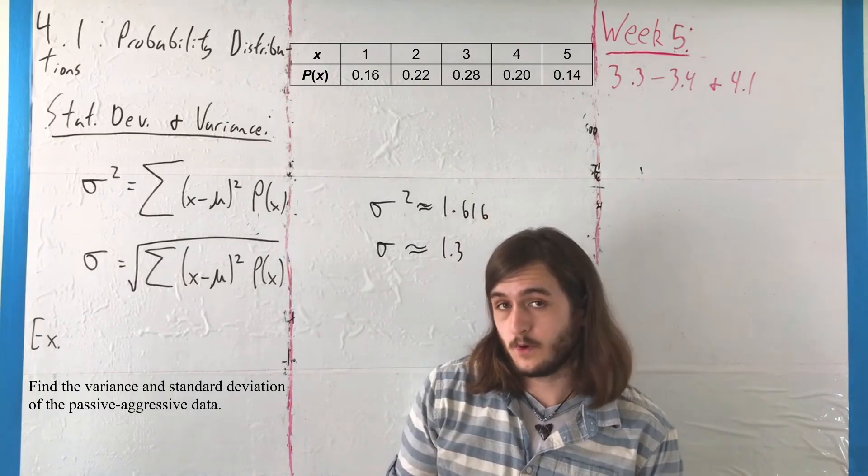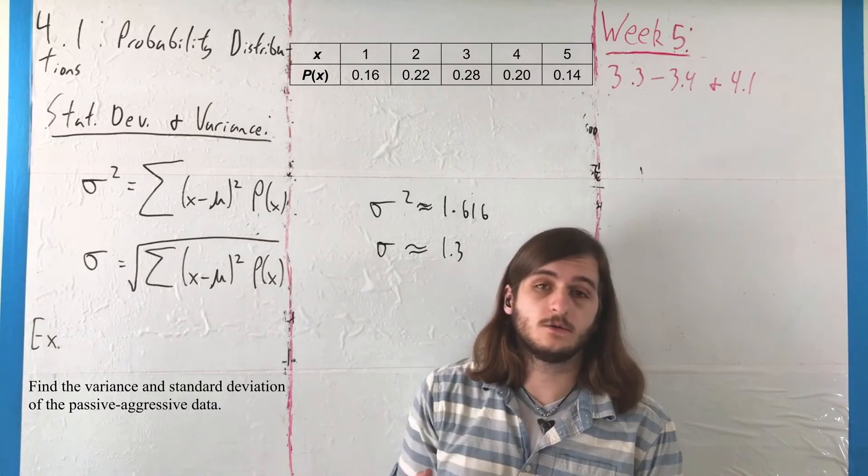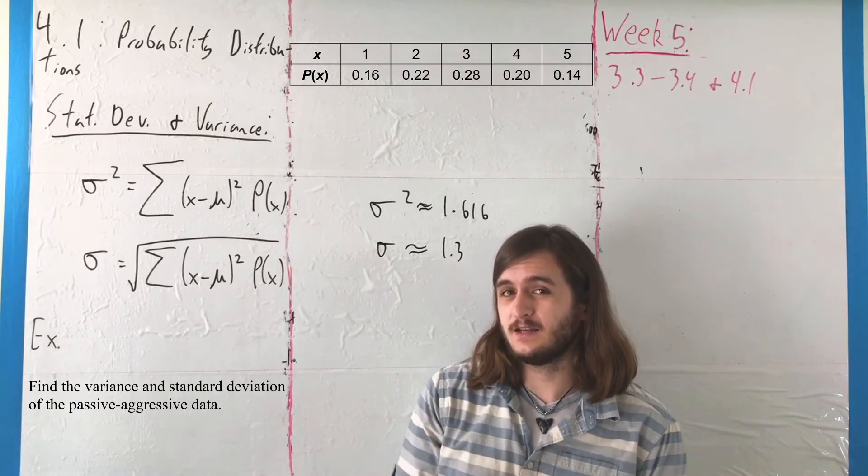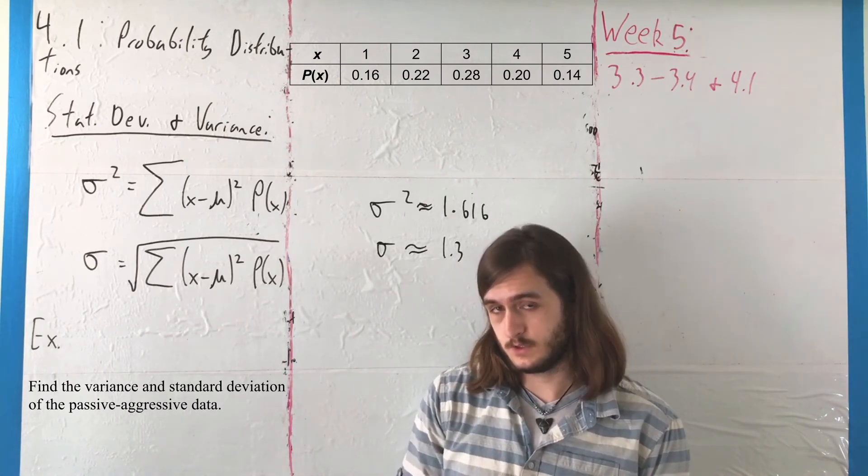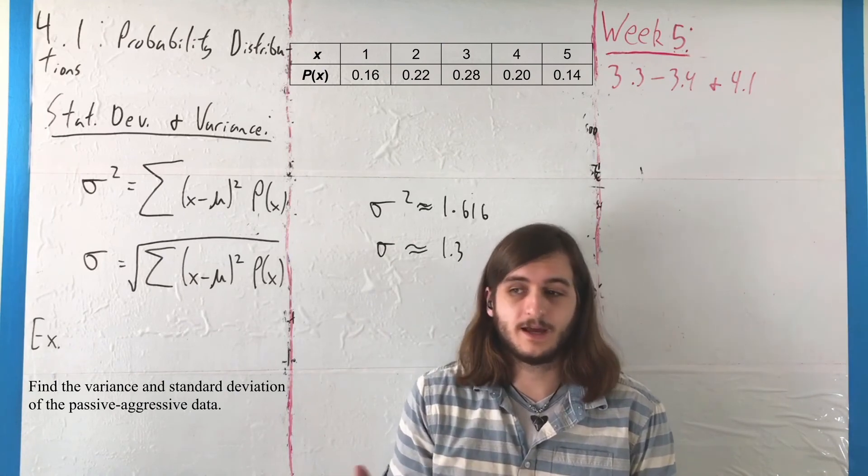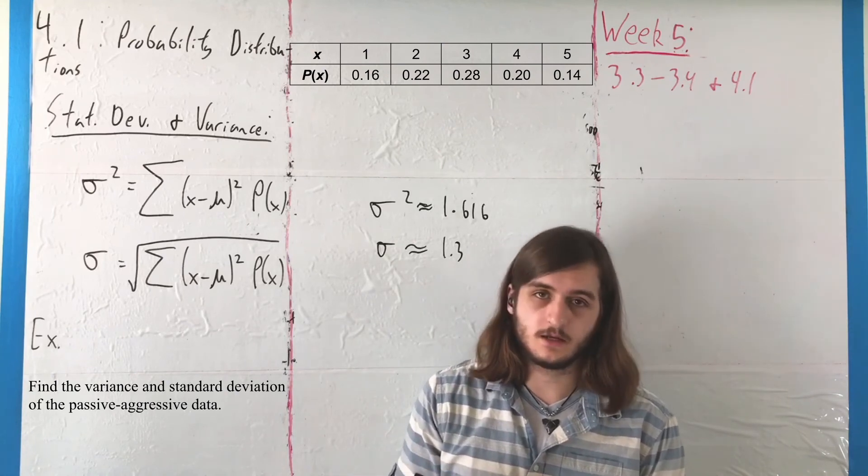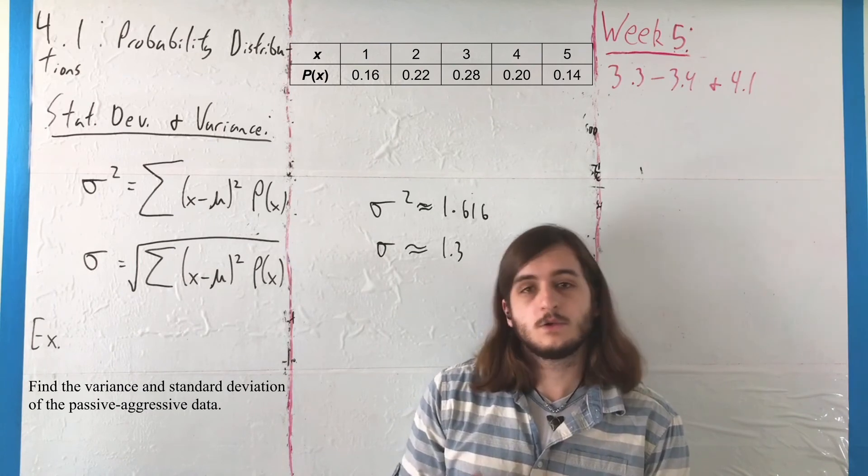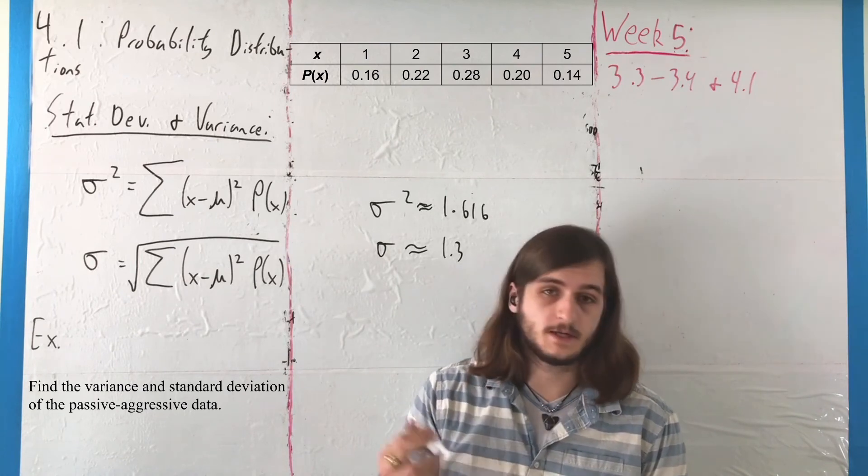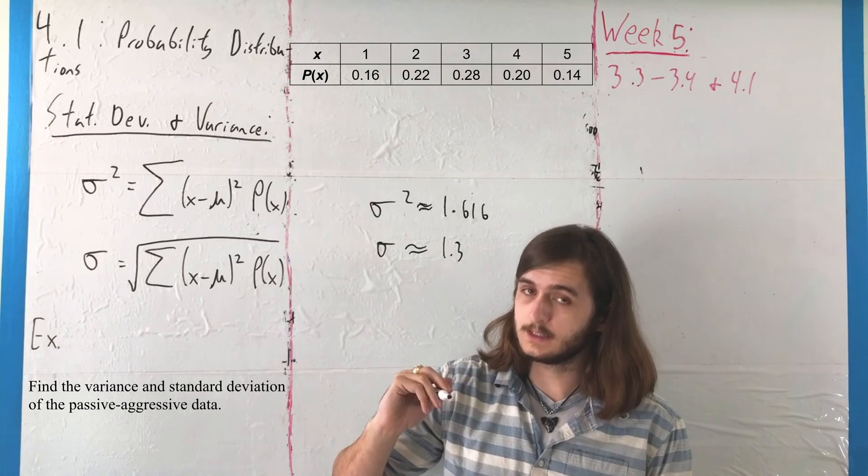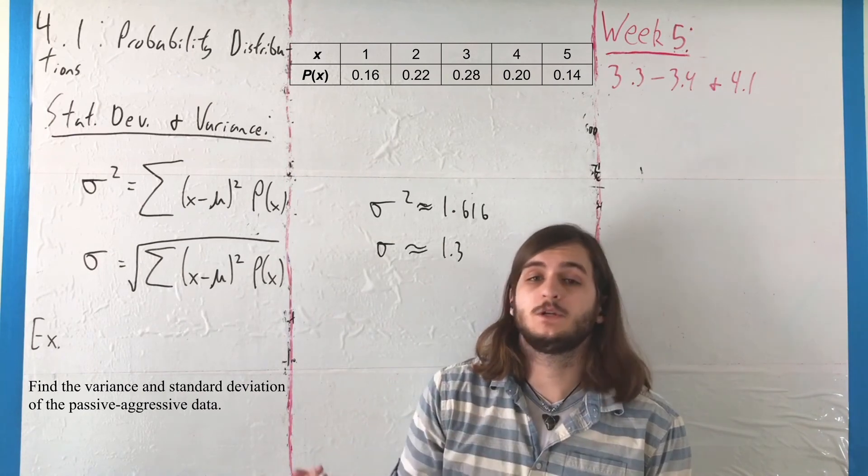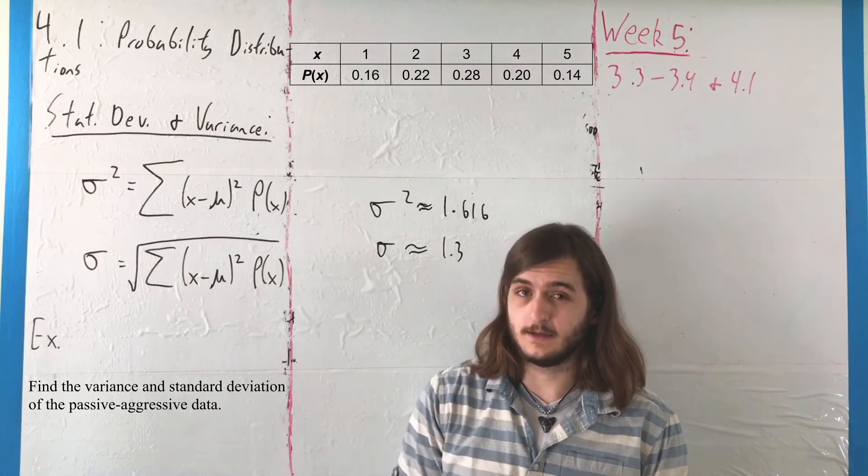That's all we have for 4.1. Next week when we get to 4.2, we'll talk about a specific kind of discrete distribution, the binomial distribution, where we're looking at probabilities associated with events where we only have two outcomes—either something happens or it doesn't. But those are 4.2 things, those are next week problems. I'll see you then.